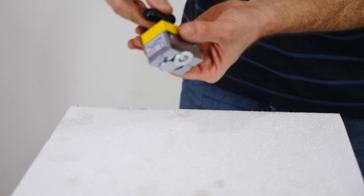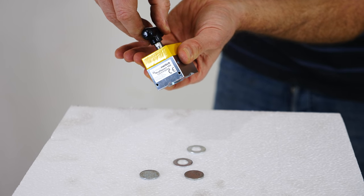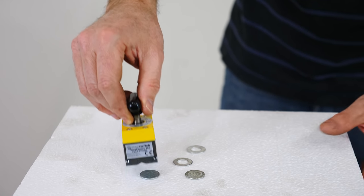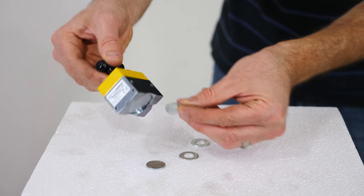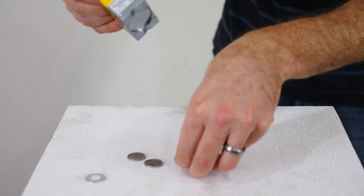So right now it's on and it can easily pick up these steel pieces of metal here. But then watch what happens when I turn it off. They just drop off like nothing and it can't even come close to picking them up again. It's completely non-magnetic now.